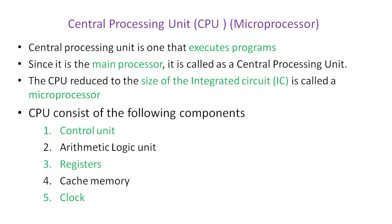Now let us go into the explanation of these components. The first major component is the microprocessor or central processing unit. It is called the central processing unit because it is the main processor. Apart from the CPU, there will be a math processor and a graphics processor that may also be present inside your computer, but the CPU is the main processor.